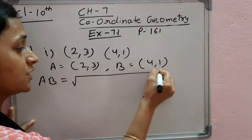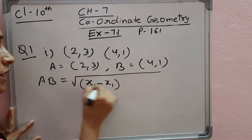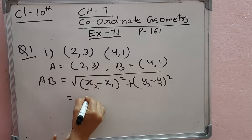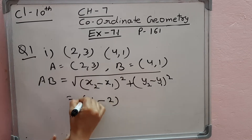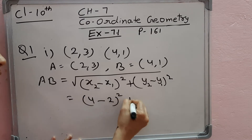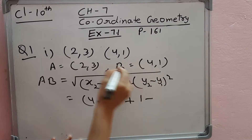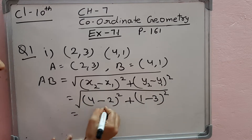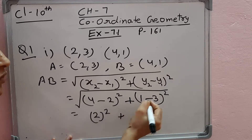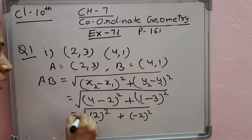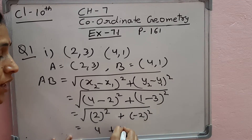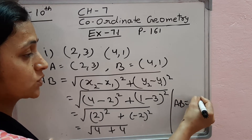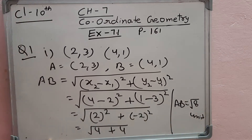So AB is equal to — write the distance formula: square root of (X2 minus X1) whole square plus (Y2 minus Y1) whole square. X2 is 4, X1 is 2, so (4 minus 2) whole square, plus Y2 is 1, Y1 is 3, so (1 minus 3) whole square. Now 4 minus 2 is 2, so 2 squared plus 1 minus 3 is minus 2 whole square. 2 squared is 4, minus 2 squared is 4. So AB is equal to square root of 8 units.